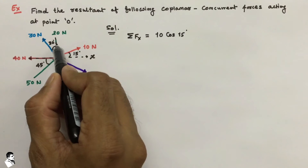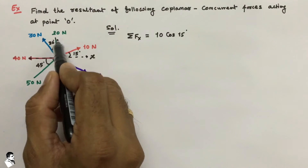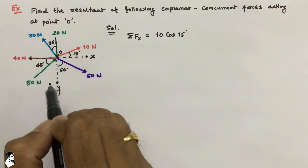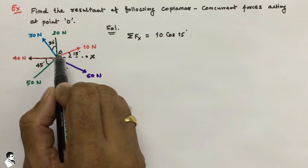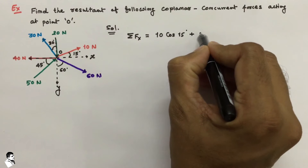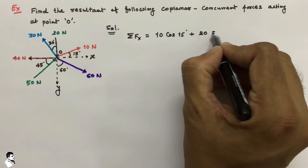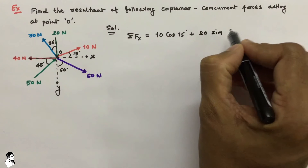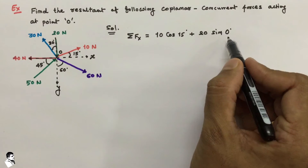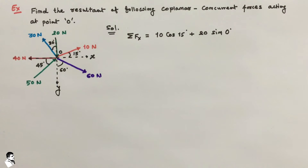Taking the second force, that is 20 Newton. For the X component, we use the sine of the angle. The angle is 0 degrees because this force is perfectly parallel to the Y axis — it lies on the Y axis. So we write plus 20 sine 0 degrees.